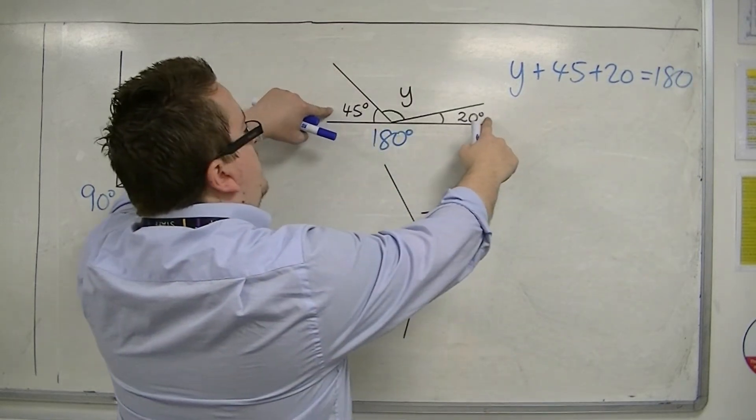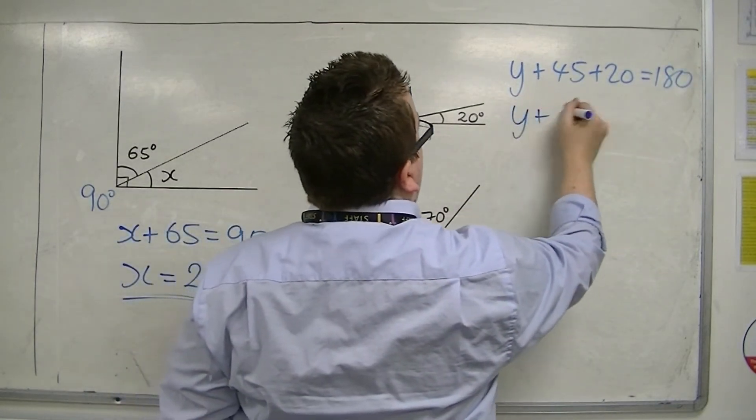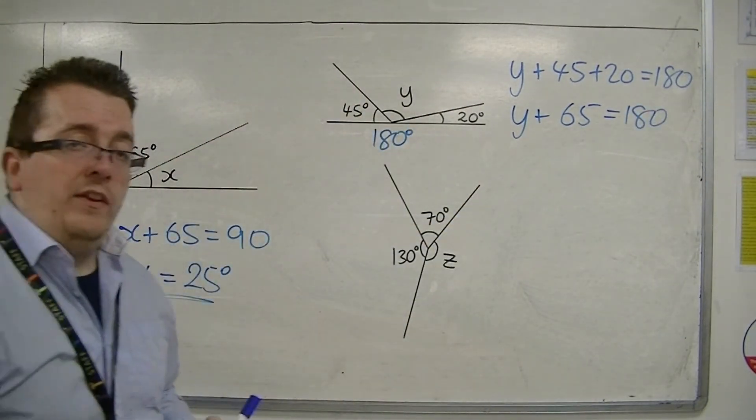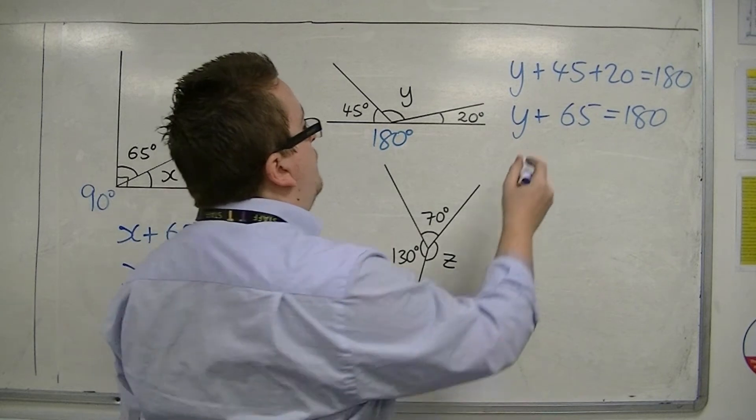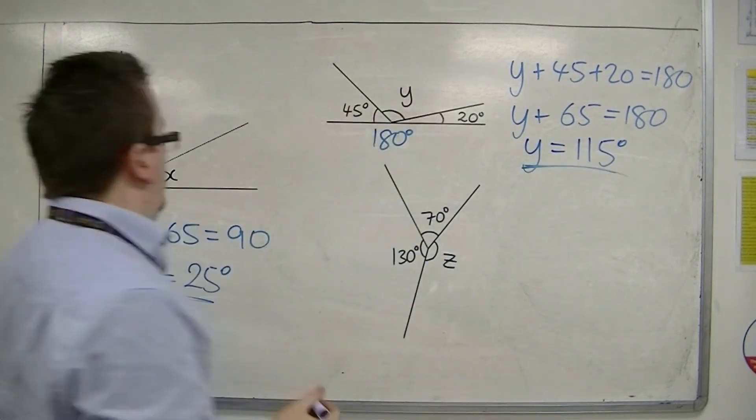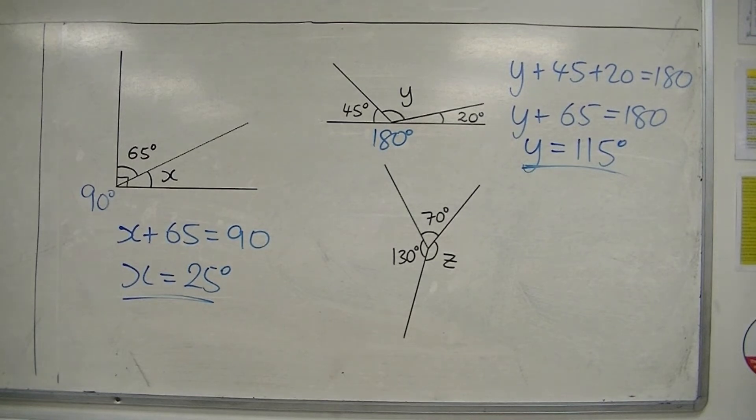Well, 45 and 20 is 65. So 180 take away the 65 will get you to 115. So y is 115 degrees.